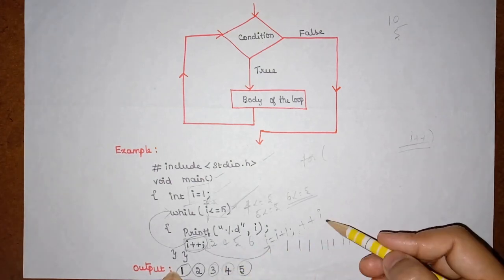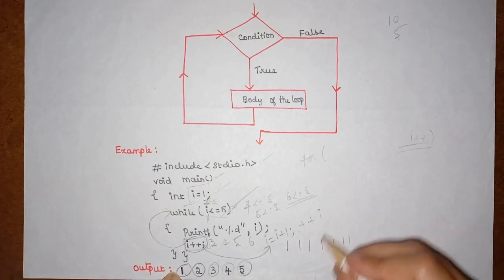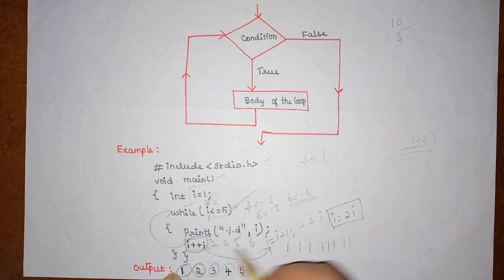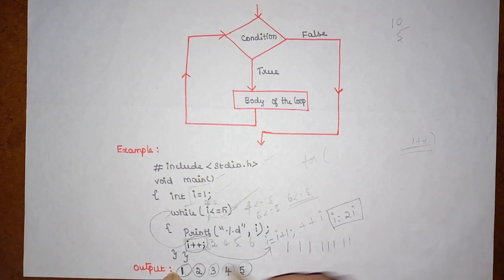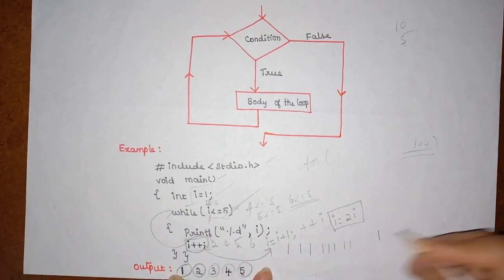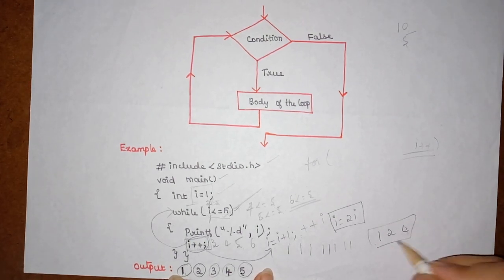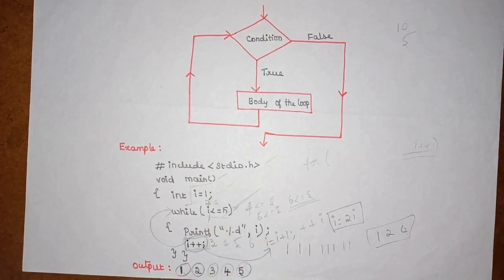If you use a different increment expression instead of i++, your output will vary. For example, it will first print 1, then 2, then 4 — so only the values 1, 2, and 4. The output depends on the expression you provide for the increment.